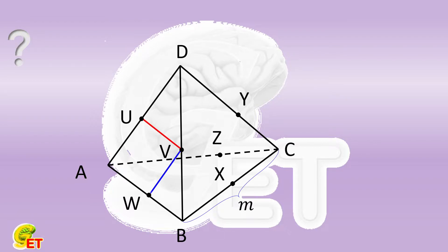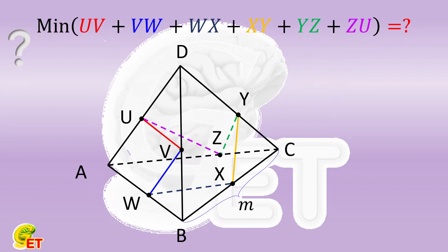We connect these six points in order, where U, V and V, W are in the same triangle, and Y, Z and Z, U are in the same triangle. So what is minimum value of the summation of the lengths of these six segments? Why not give a try, and we will come back soon.